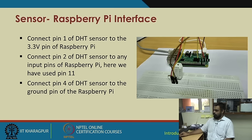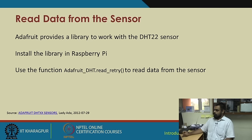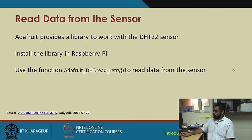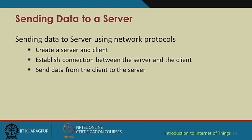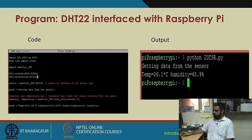We are connecting the DHT sensor to the 3.3 volt pin of Raspberry Pi, connecting the data pin (pin 2 of the DHT sensor) to pin 11 of Raspberry Pi in BCM mode, and connecting pin 4 of the DHT sensor to the ground pin. Adafruit, which supplies the DHT22 sensor, also provides a library to integrate this sensor to Raspberry Pi via Python. This has already been installed in the previous lecture. We call the adafruit_dht.read_retry function to read data from the sensor — we are going to read temperature only, though you can also attach humidity readings.